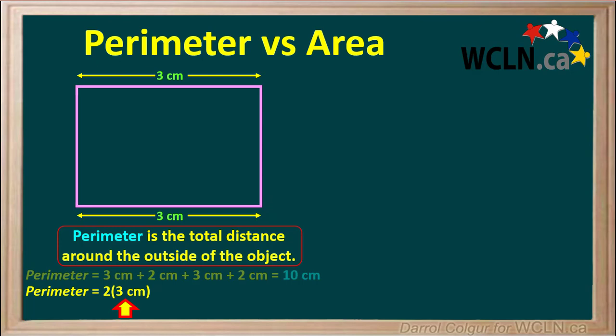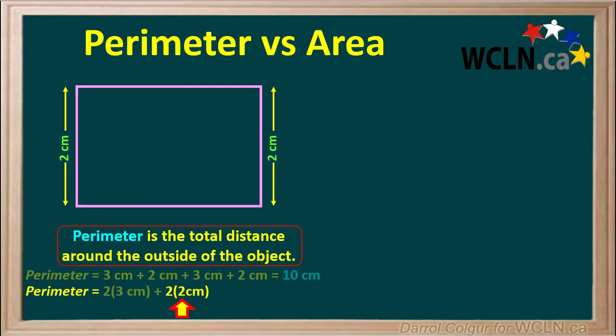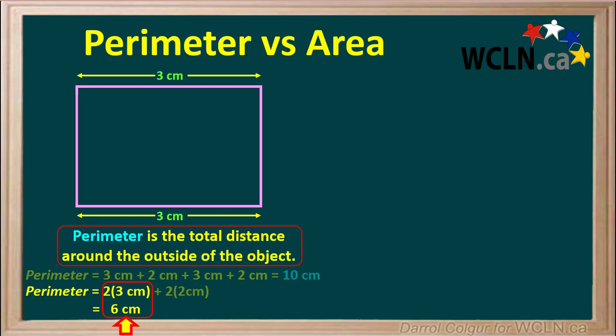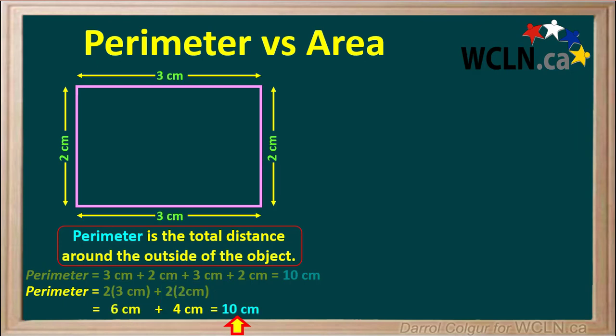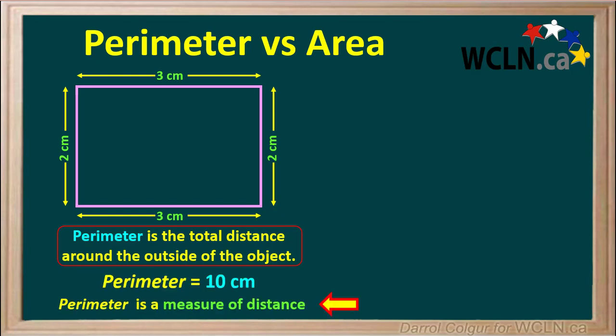We can also calculate the perimeter using 2 times 3 cm for the top and the bottom, plus 2 times 2 cm for the two sides. 2 times 3 cm is 6 cm, and 2 times 2 cm is 4 cm. So again, the total perimeter is 6 plus 4, or 10 cm. We can see that the perimeter is just the total distance around the outside of an object. So perimeter is just a measure of distance.